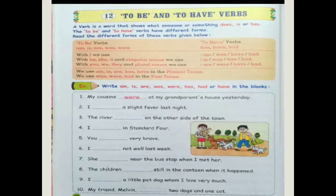Here we are talking about plural nouns, and we are talking about yesterday — what happened at grandparents' house. So it is about past tense, and we have to use the verb 'were'.